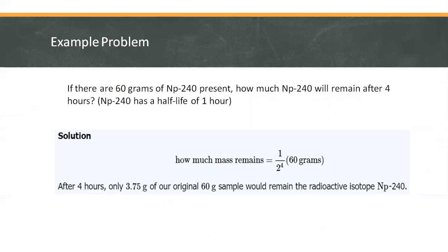Solution: The remaining mass of Np-240 is equal to the original amount, 60 grams, times the fraction remaining, which is equal to 1 over 2 raised to 4, where 4 is based on the 4 hours it takes, or the span or the period of reaction. So after 4 hours, only 3.75 grams of the original 60 gram sample would remain of the radioactive isotope Np-240.